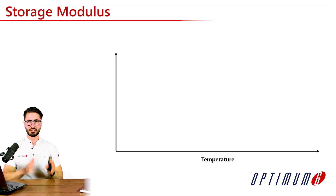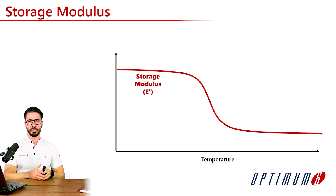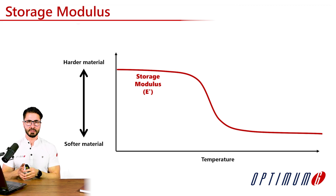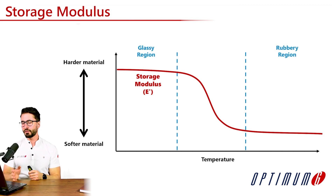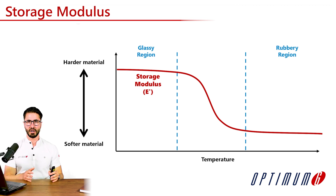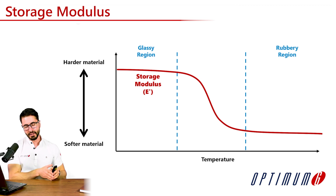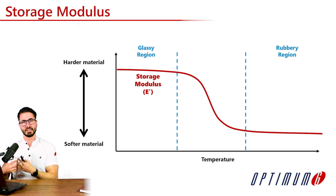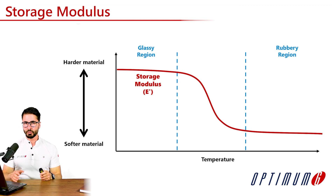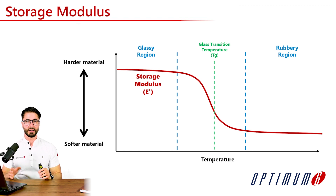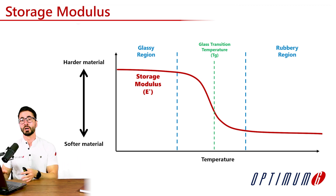We will start discussing the storage modulus. The storage modulus is basically a measure of the rubber's elastic behavior. A higher number means that the material is harder, while a lower number indicates that this material is softer. Besides that, we have two very distinct regions for this type of material. We have the glassy region on the left side — at low temperatures, the material will behave more like a glass, it's a very hard material. While on the right side, we have the rubbery region, meaning that if we warm up this material, it will behave more as a rubber. Between these two regions, we have a very specific point called the glass transition temperature, where the material goes from a glassy behavior to a rubbery behavior.